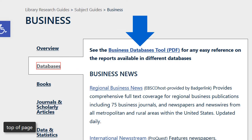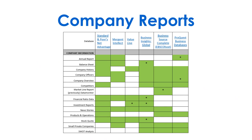Need a specific kind of company report? On the databases tab, check the business databases tool. In the PDF, you'll find a chart which details what type of reports you can find in which database.